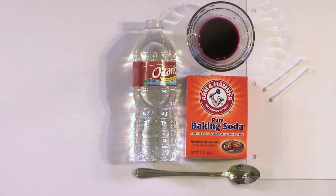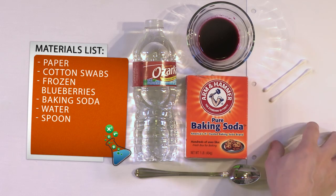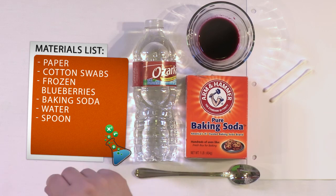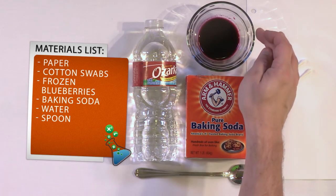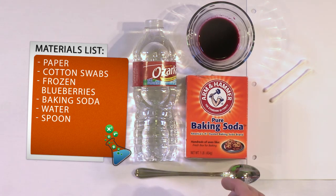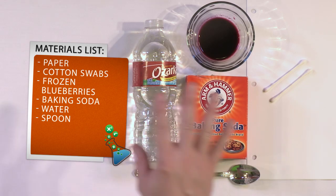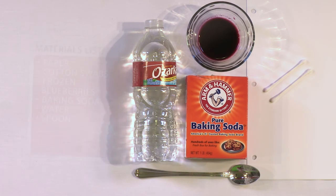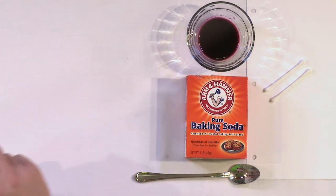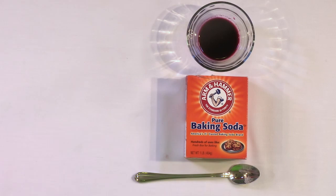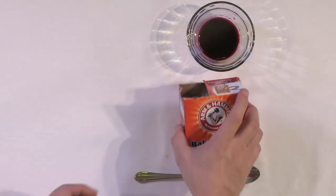So all you need with this experiment is some paper to write your messages, some Q-tips to act like a pencil to write your invisible messages, blueberry juice here which I'll show you where you can get in just a minute, some baking soda, and some water and a spoon. So it's very simple, easy to find materials.